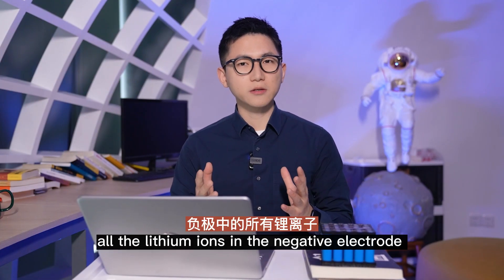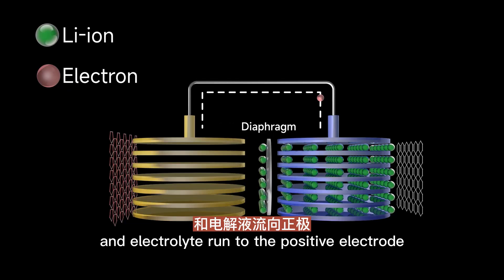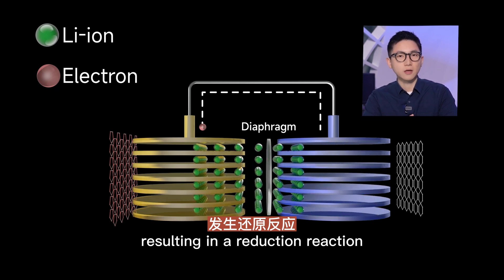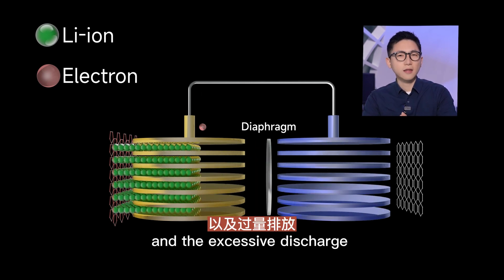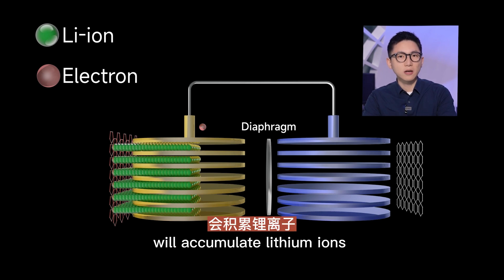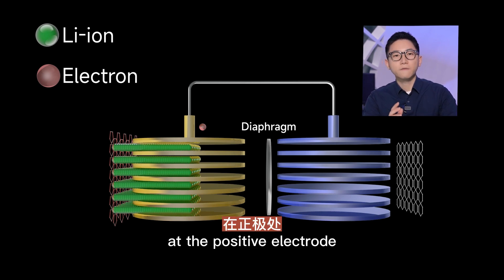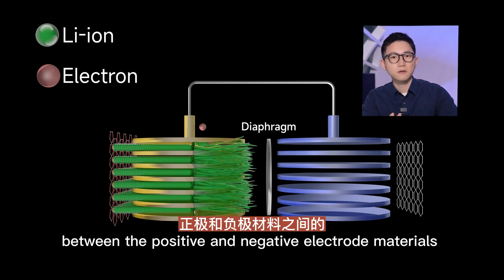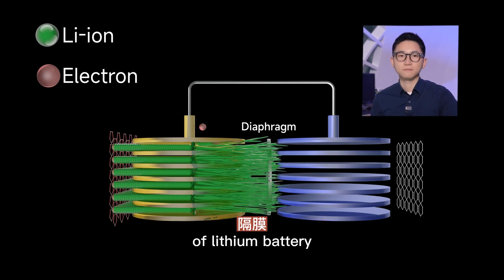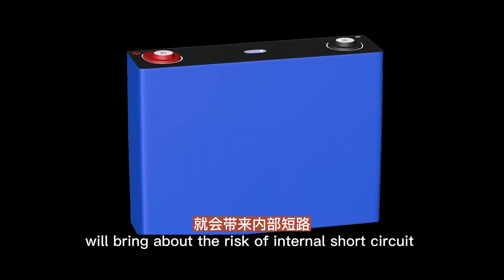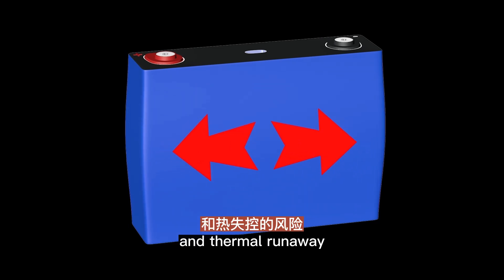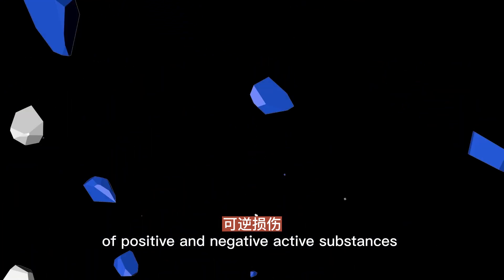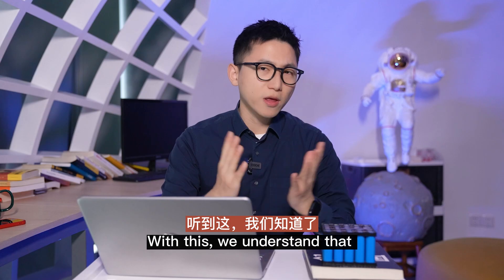During the discharge process of the lithium battery, all the lithium ions in the negative electrode and electrolyte run to the positive electrode, resulting in a reduction reaction. The positive electrode material is limited, and excessive discharge will accumulate lithium ions at the positive electrode, forming lithium dendrites which pierce the insulating diaphragm between the positive and negative electrode materials.